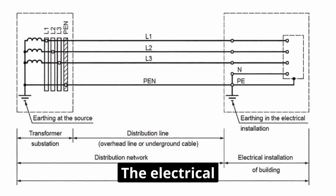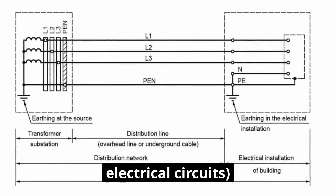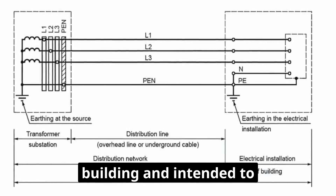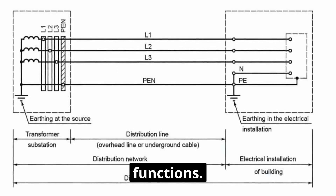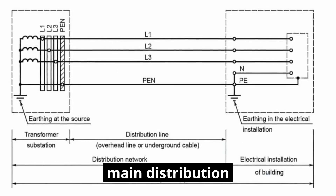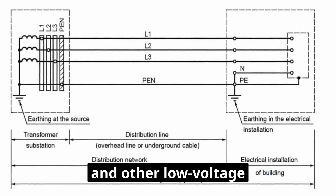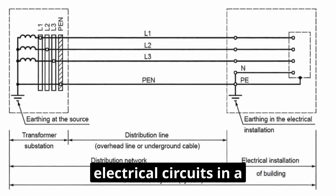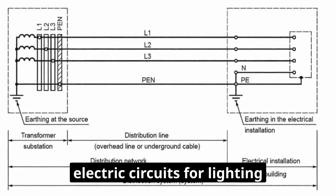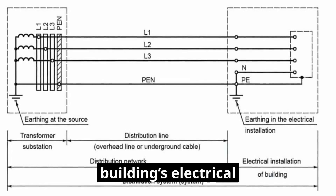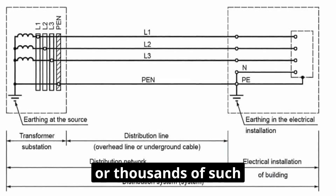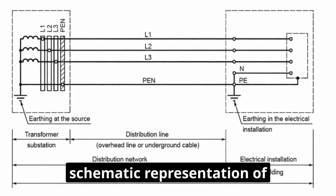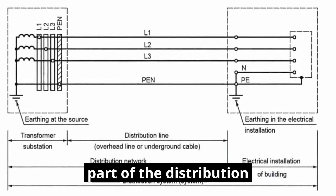The electrical installation of a building consists of several parts — electrical circuits — which combine electrical equipment installed in one or more rooms of the building and intended to perform certain functions. Electrical circuits are connected to main distribution boards, consumer units, and other low-voltage switchgear of the building's electrical installation. The most common electrical circuits in a building's electrical installation are the final electric circuits for lighting and outlets. A large building's electrical installation can have hundreds or thousands of such circuits. The figure shows, as an example, a schematic representation of the electrical installation of a building that is part of the distribution system.